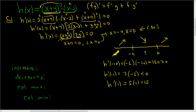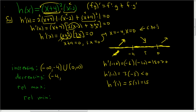So the function is increasing from negative infinity to negative 4, union 0 to infinity. And decreasing from negative 4 to 0.